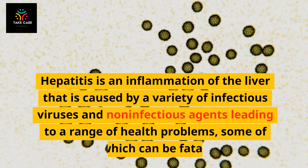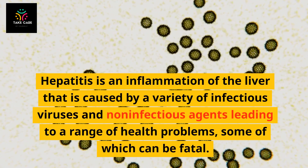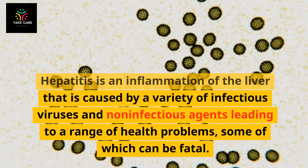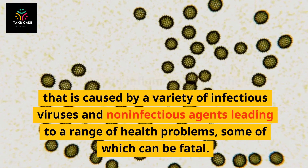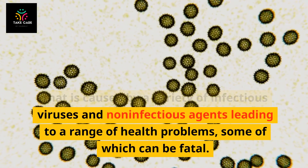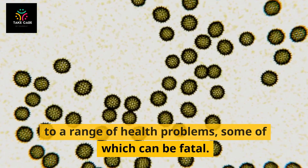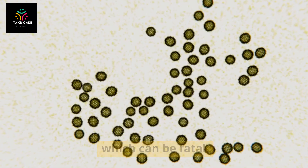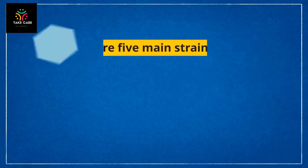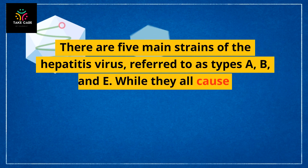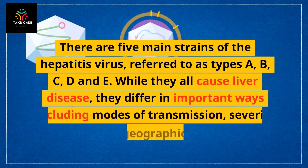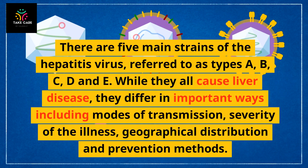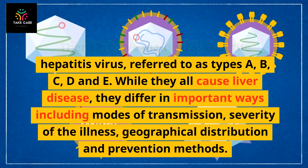Hepatitis is an inflammation of the liver caused by a variety of infectious viruses and non-infectious agents, leading to a range of health problems, some of which can be fatal. There are five main strains of the hepatitis virus, referred to as types A, B, C, D and E.